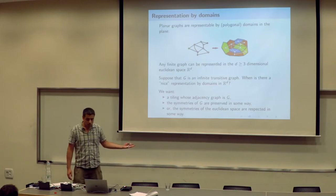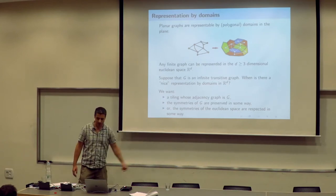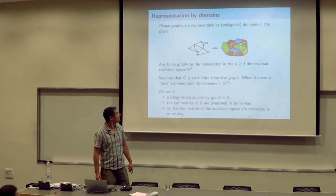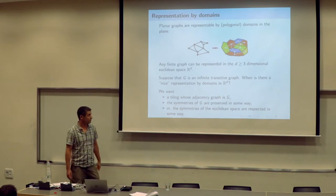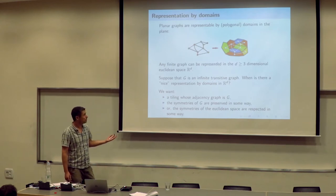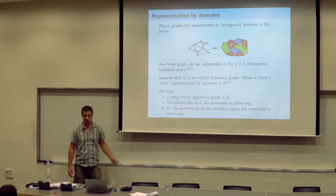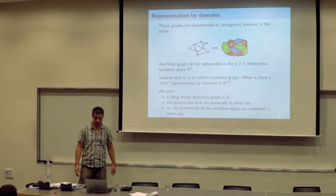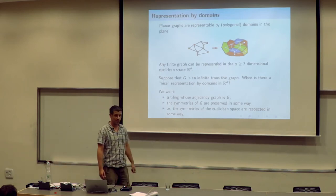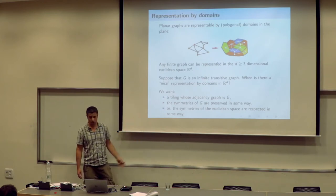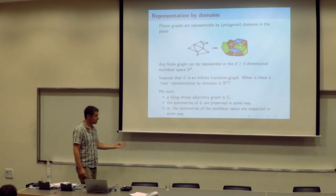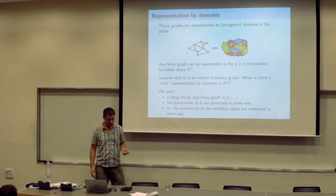Now our question — I am trying to motivate the main question coming from Itai in the next few slides — is: what happens for infinite graphs? Suppose we have an infinite transitive graph G, and we want to represent it by domains or polyhedra in Euclidean space. Since the graph is transitive and has nice symmetries, we would like this representation to preserve either the symmetries of the graph or the symmetries of the Euclidean space. This is the meta question.